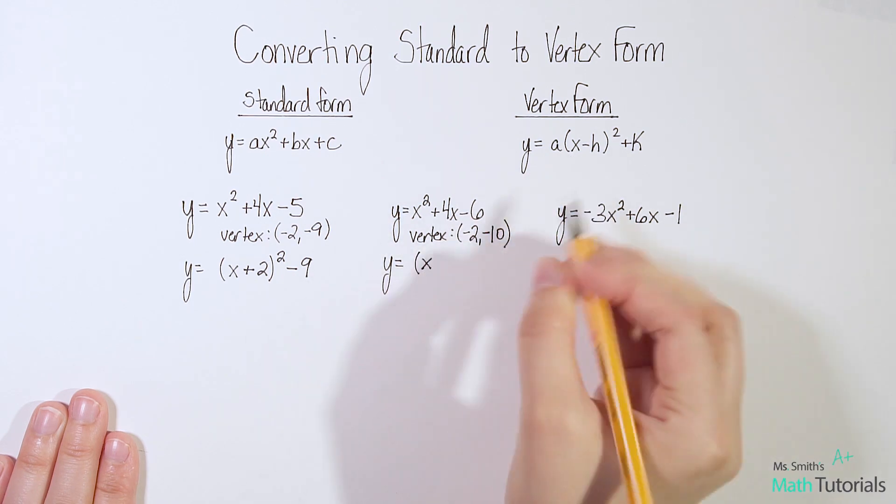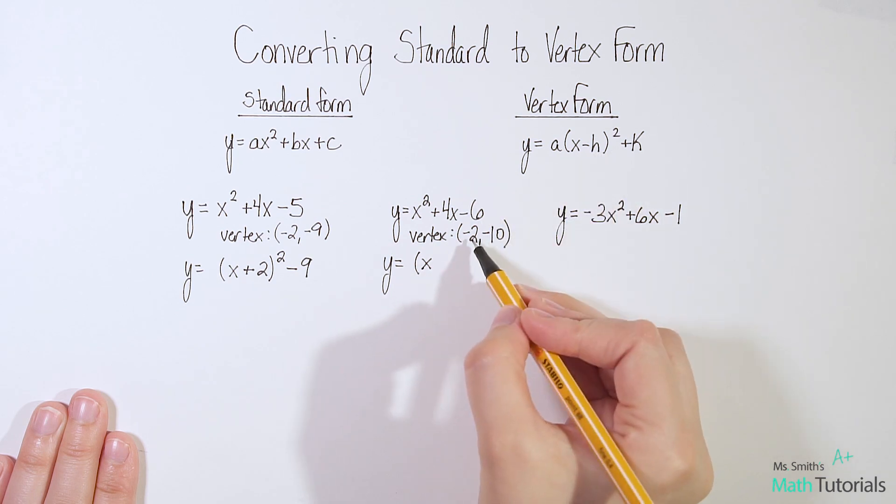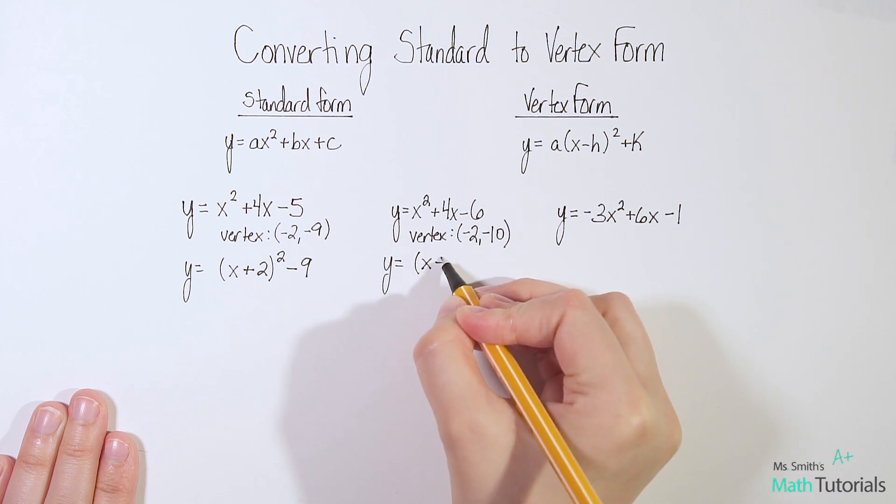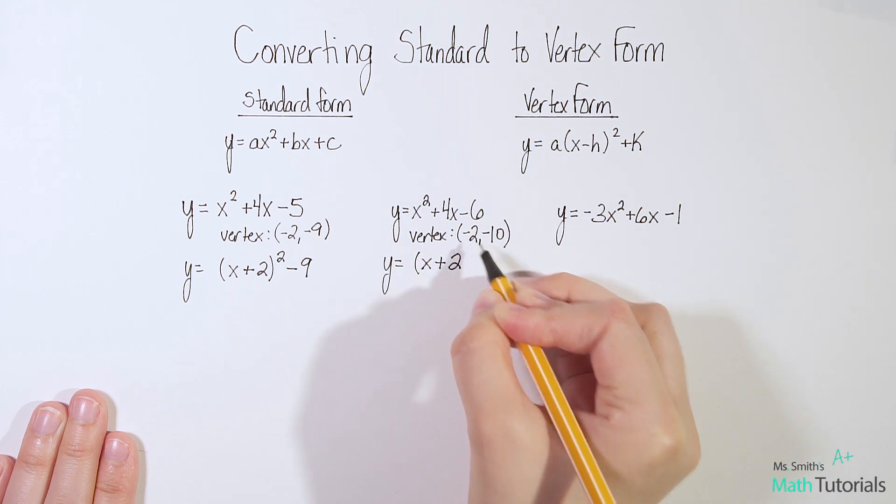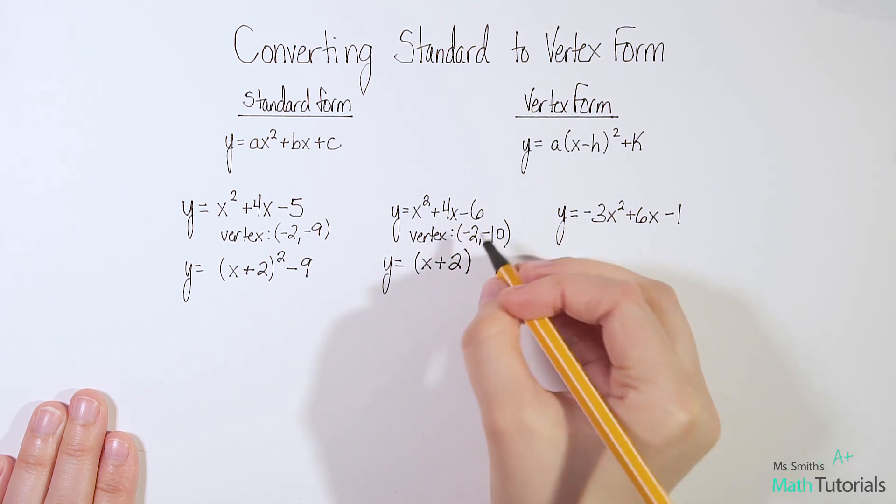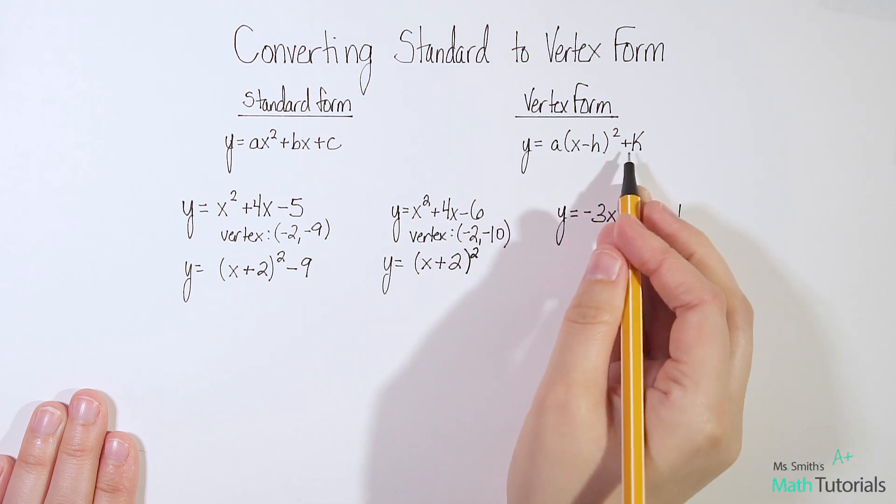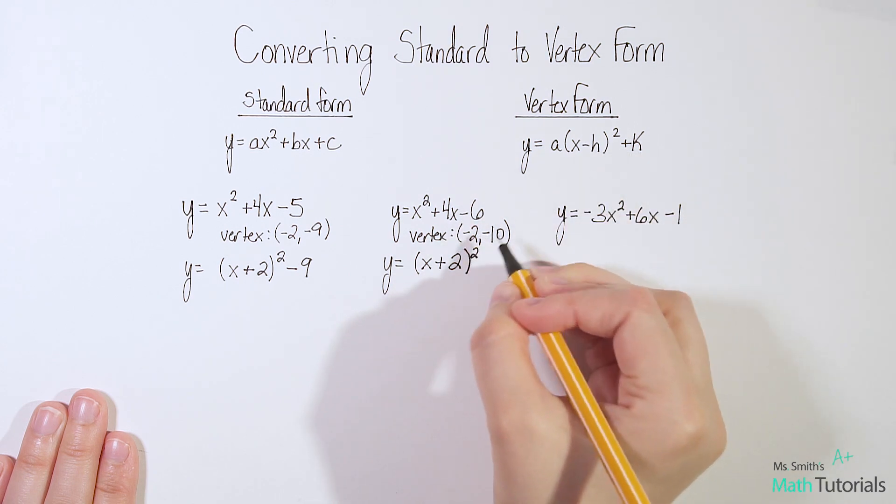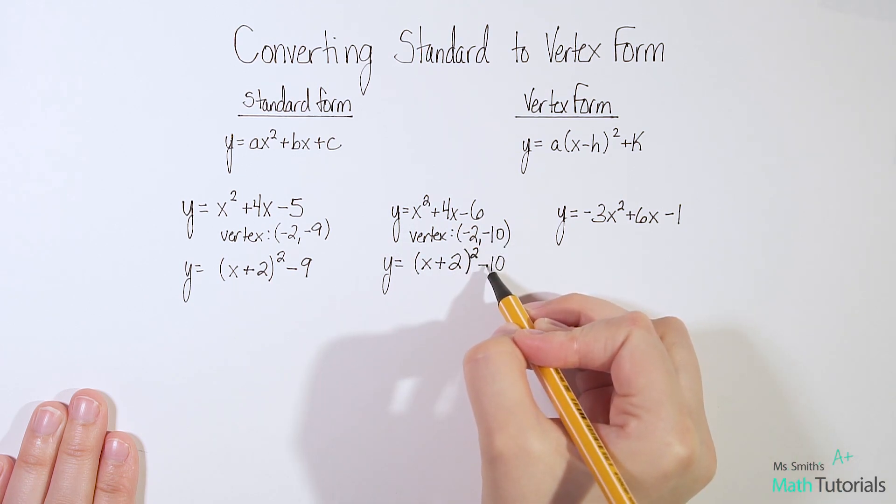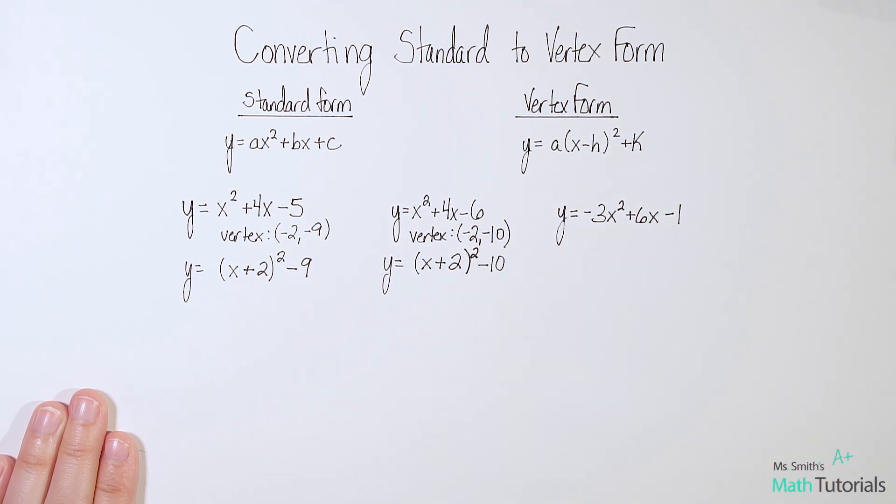Parenthesis, x, and then we need our h. So in this case, it's a minus 2. Remember, h is our x value, and it is the opposite sign of what you're given in your vertex. Squared, and then plus k. So in this case, it'd be minus 10. The y value is the exact same sign as you are given in the vertex.